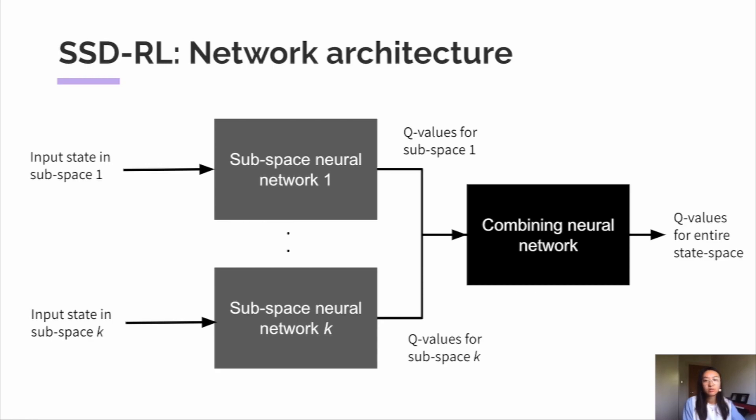This diagram shows our final network architecture of SSDRL after conducting numerous experiments. So we have subspace neural networks which are responsible for learning the Q-value function for each of our state subspaces. And then we have the combining neural network which uses our learned subproblems to solve the overarching problem by taking into account inter subspace experiences.